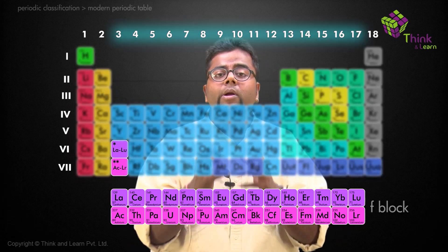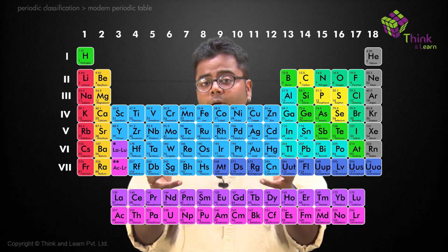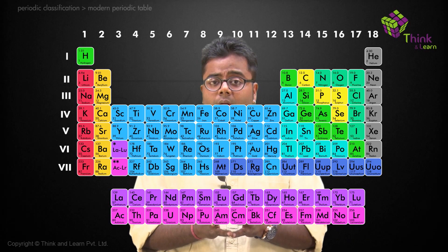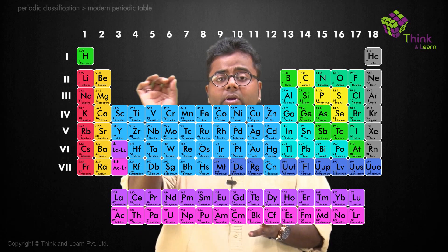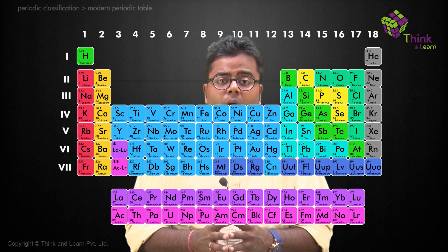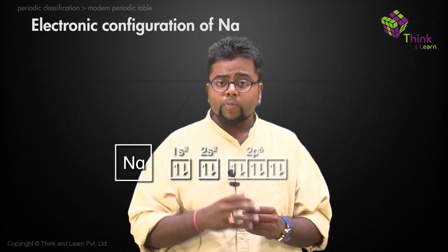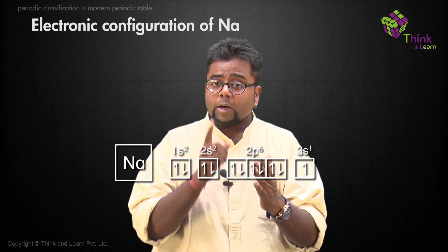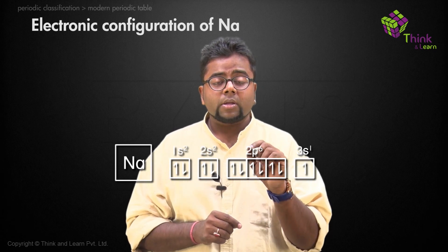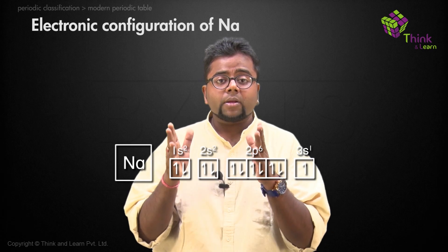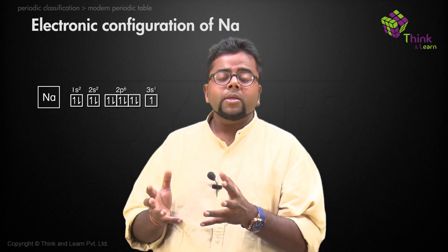How is the block determined? When you write the electronic configuration of a particular element, the last electron — whichever subshell it enters — that is the block. For example, sodium has the electronic configuration 1s², 2s², 2p⁶, and 3s¹. The last electron has entered the S-subshell, so sodium lies in the S-block. Similarly, you can find out which block a particular element belongs to just by finding its electronic configuration.